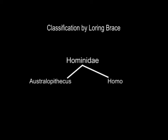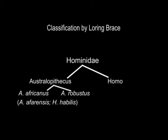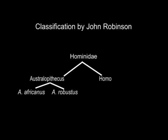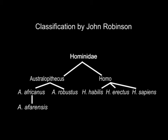According to the classification given by Loren Brace, hominid is divided into two genera: Australopithecus and Homo. Australopithecus is divided into two — Australopithecus africanus and Australopithecus robustus — of which Australopithecus africanus is further divided into Australopithecus afarensis and Homo habilis. Homo is divided into Homo erectus and Homo sapiens. Another classification by John Robinson also divides hominid into two, with Australopithecus subdivided into Australopithecus africanus and Australopithecus robustus, with Australopithecus afarensis included within Australopithecus africanus. Robinson divides Homo into three: Homo habilis, Homo erectus, and Homo sapiens. According to Loren Brace, Homo habilis is a member of Australopithecus africanus, but in John Robinson's classification it is not.